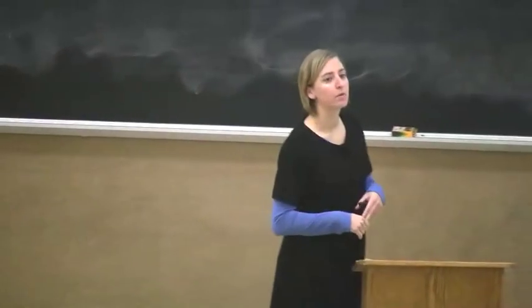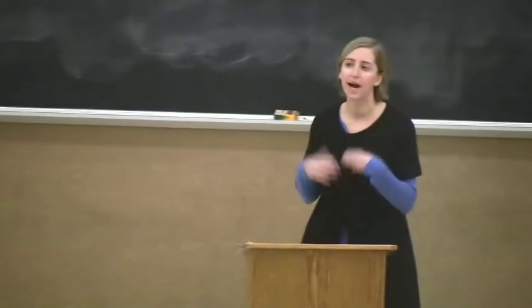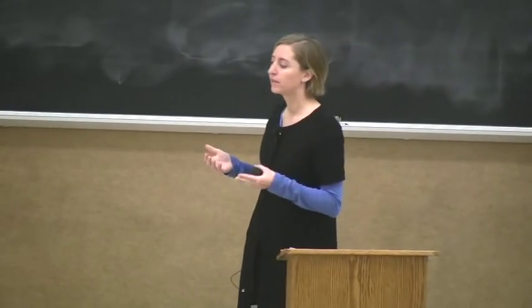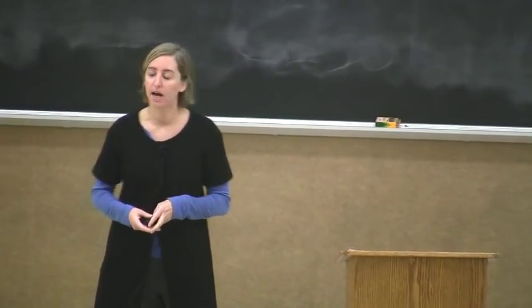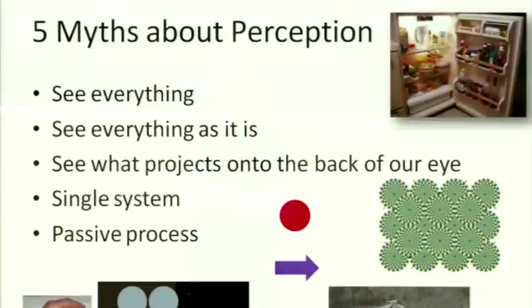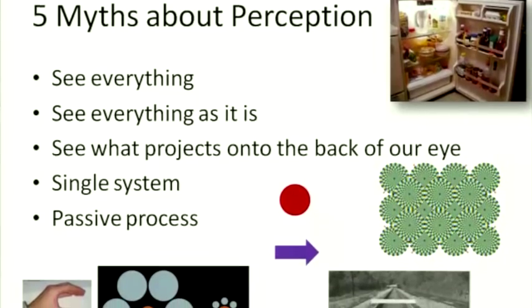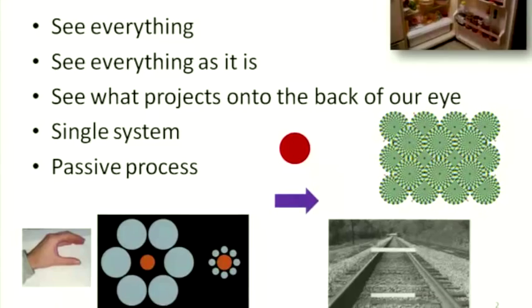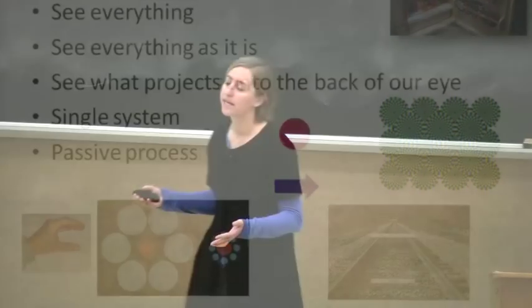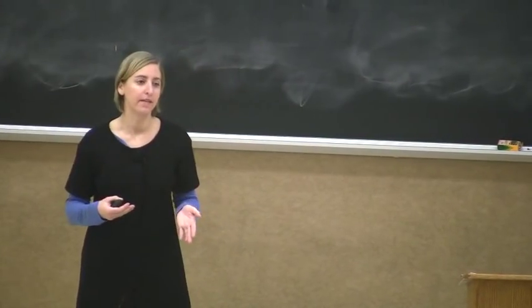Last time we started with perception and some common things people believe to be true about perception that's not really the case. The list is up here. The first one is that we have this impression that we see everything, that we're aware of everything that's visible all the time. And we showed how this is not the case.